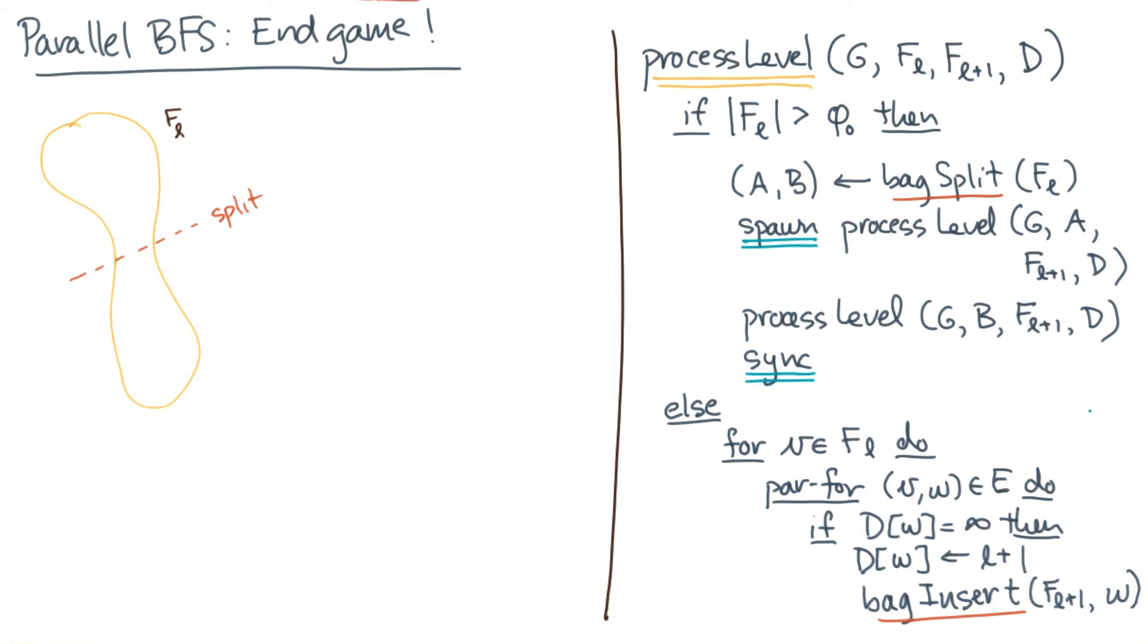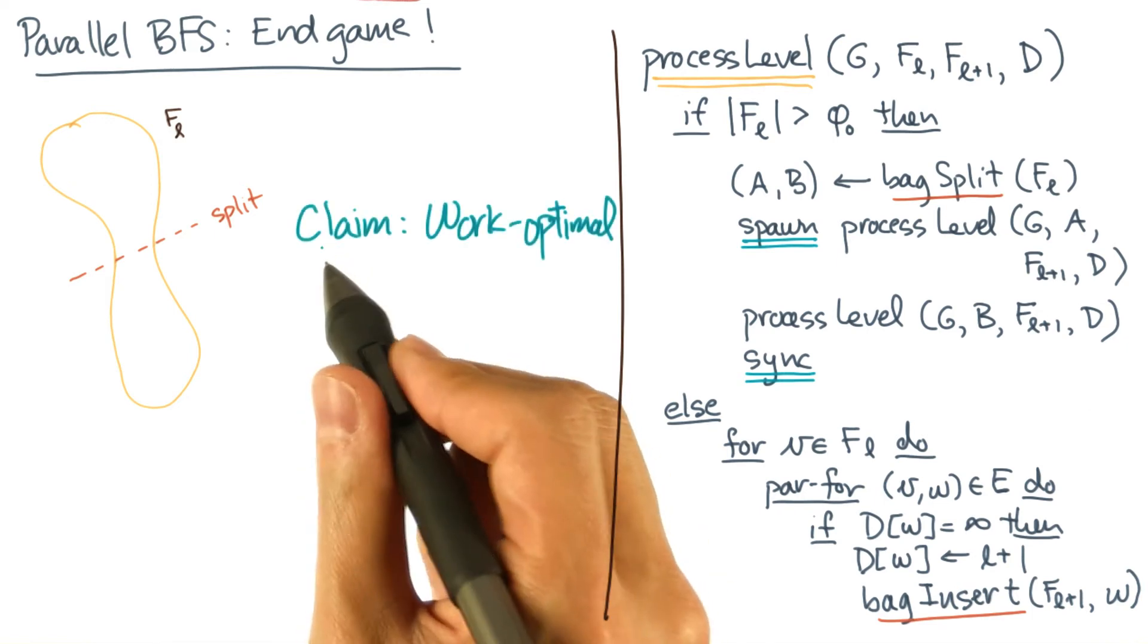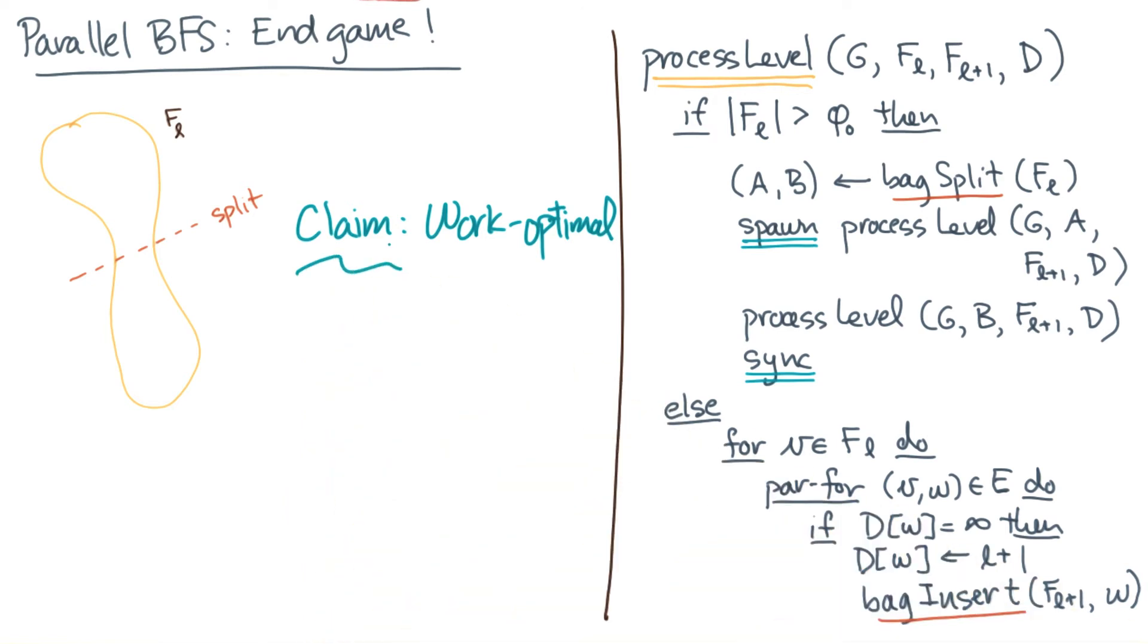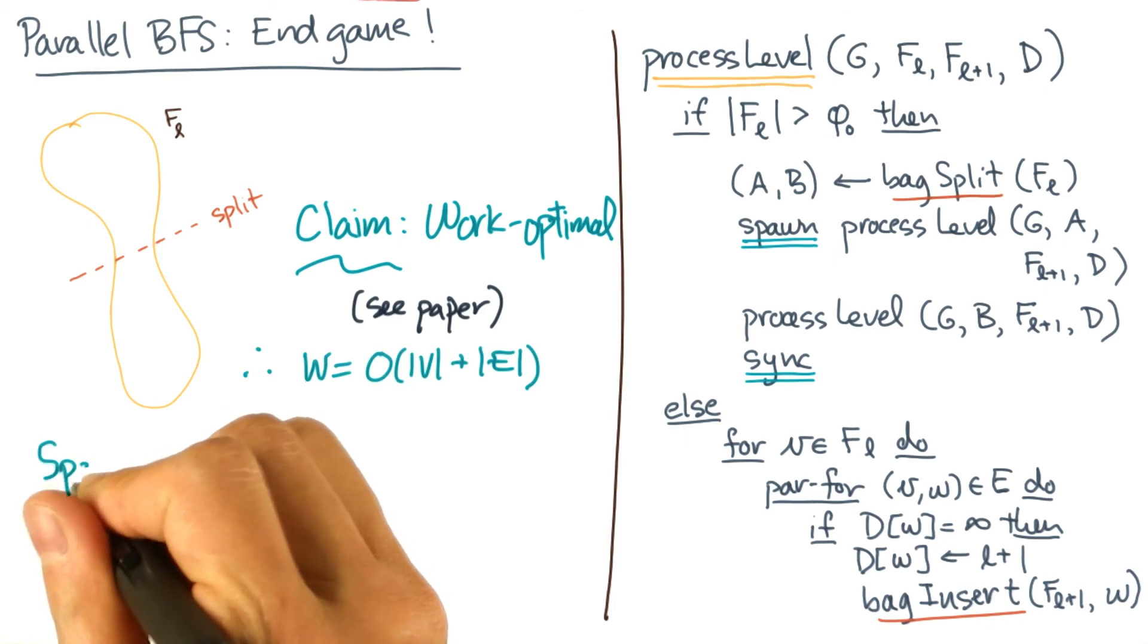We're almost done. The last thing we need to do is analyze the cost. Now the cost analysis is really tricky. So if you want all the gory details, I refer you to the paper by Leiserson and Schardl, which we posted on the instructor's notes. For now, let's just sketch the analysis. First, I'm going to claim that the algorithm is work optimal. If you want the gory details, please see the paper.